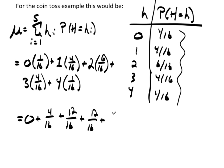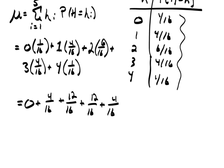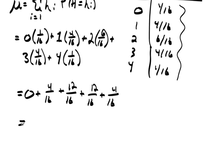Plus, 3 times 4, that's another 12/16ths. Plus, 4/16ths. Which is equal to 32/16ths, which is equal to 2.